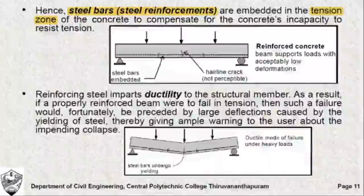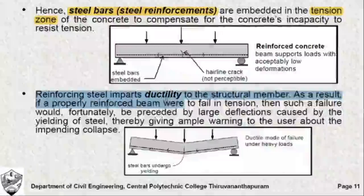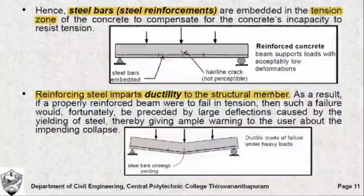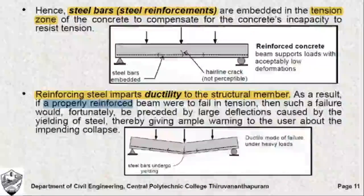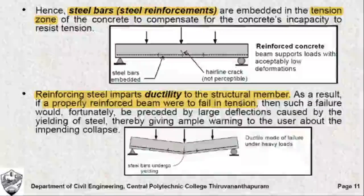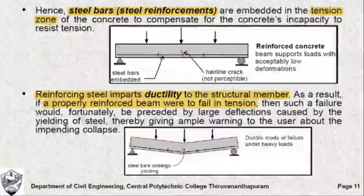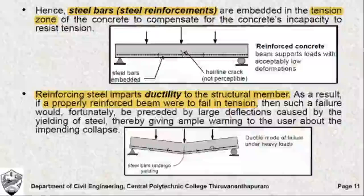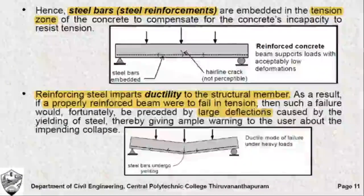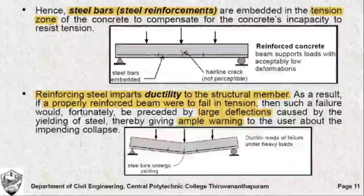Further, the reinforcing steel imparts ductility to the structural member. A properly reinforced beam, if it is expected to fail in tension, then with the presence of steel instead of abrupt fracture, it results in yielding of steel in the tension zone. This results in large-scale deflections in the structure which gives ample warning to the user before the impending collapse.